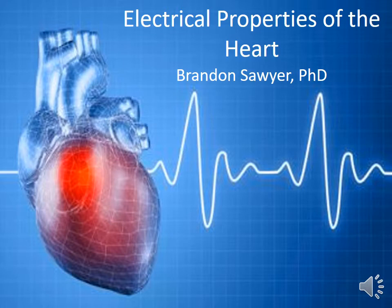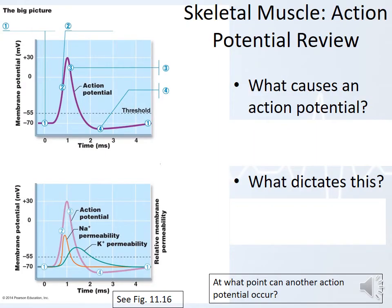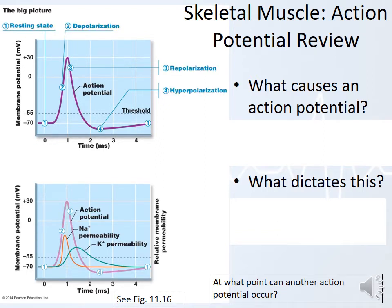We're going to look at the way different heart cells have action potentials — how that looks a little different than skeletal muscle and neuron action potentials. As a review: what causes a skeletal muscle action potential? There are four phases. Phase one is resting. Phase two is depolarization. Phase three is repolarization. Phase four is hyperpolarization.